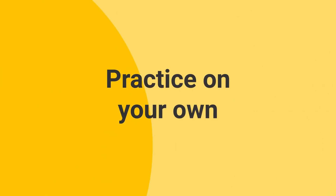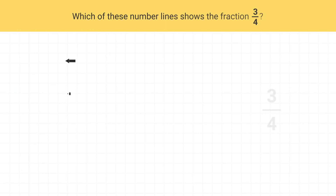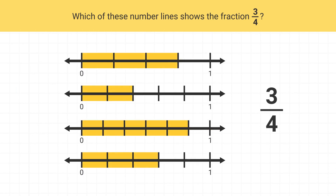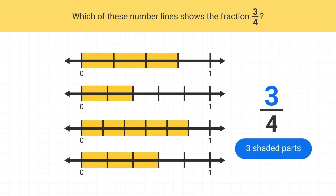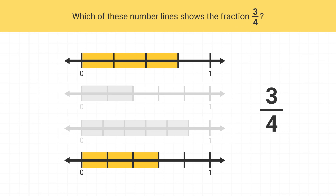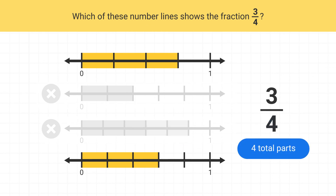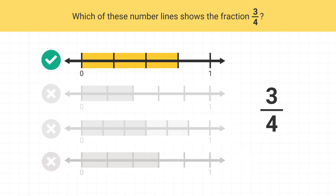Now it's time for you to practice on your own. Which of these number lines shows the fraction 3 fourths? The numerator of 3 means there are three shaded parts on our number line. These two number lines have three shaded parts; the others don't. Next we see the denominator of four, so we need to find a number line that has a total of four parts between 0 and 1. This is our correct number line, because it is the only one that has four total parts.